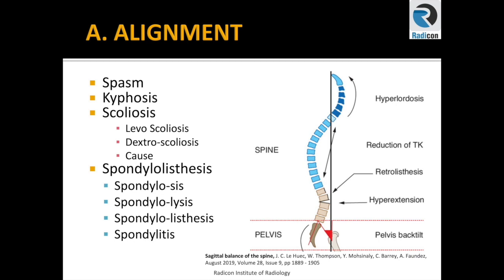Scoliosis is a sideward or lateral flexion or curve of the spine. It should be straight, but if it curves to the left side, it is levoscoliosis; if it curves to the right side, it is dextroscoliosis. There are various causes for that, some of which we will analyze in this talk.